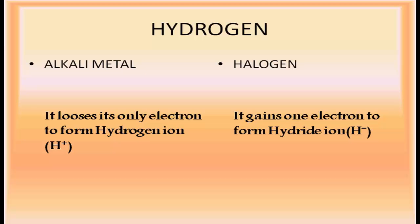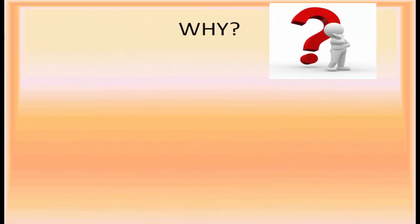Just as halogens gain one electron to form halide anions, hydrogen gains one electron to form the hydride ion H⁻. Alkali metals give cations and halogens give anions. These are the key similarities between hydrogen and alkali metals, and between hydrogen and halogens. But why is hydrogen kept above the alkali metals and not among the halogens?